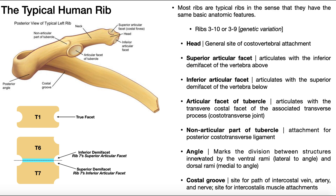Then we have the angle of the rib, which is more of an anatomical landmark. It marks the division between structures innervated by ventral rami and dorsal rami. Generally speaking for muscles: if a muscle is innervated lateral to the angle of the rib — outside of it — it's usually innervated by ventral rami from the spinal cord. If that muscle is medially angled — within it — it's going to be innervated by dorsal rami.